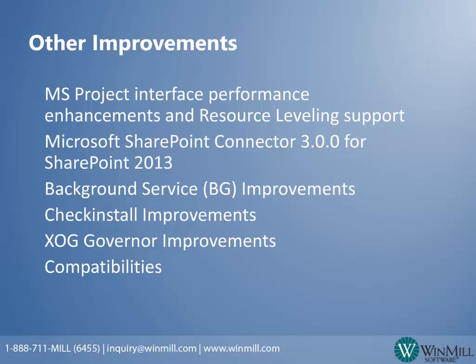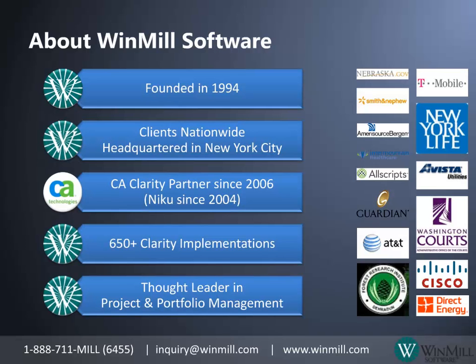For additional information, check out the CA Clarity PPM release notes for 13.3. Windmill Software provides the services you need to effectively utilize CA Clarity to improve project, portfolio, financial, and resource management for your organization. We are a preferred services partner and advanced channel partner of CA Technologies, with over 650 CA Clarity professional services implementations since 2004. For more information, contact the Windmill Account Manager at inquiry@windmill.com or 1-888-711-6455.